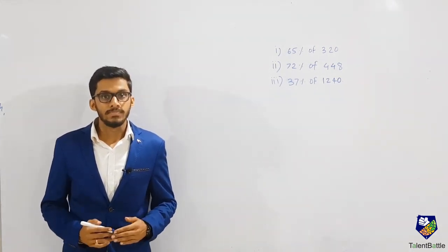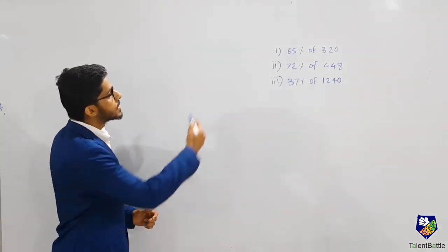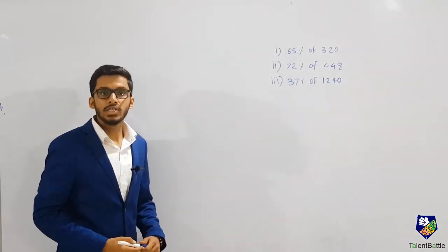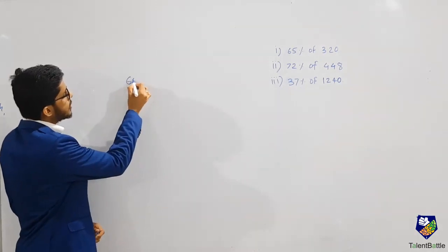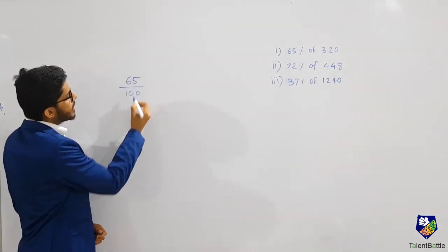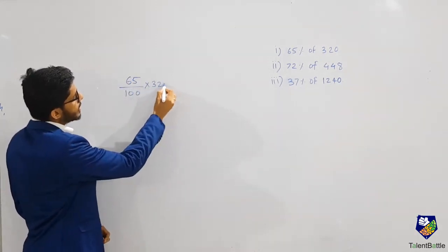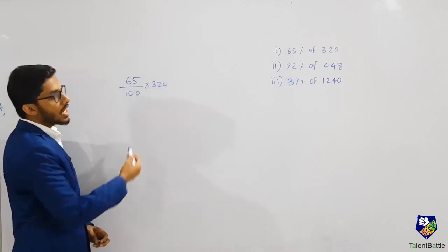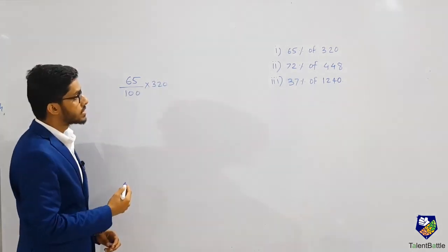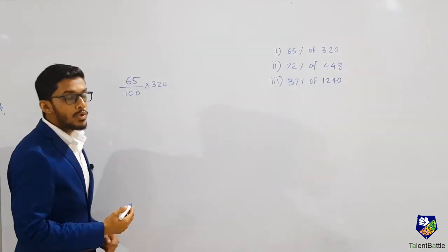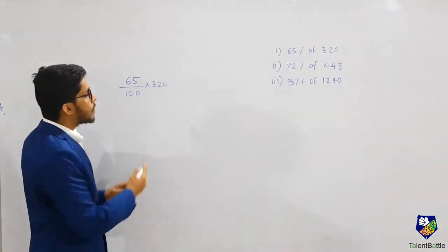So let's look at this first problem: 65 percent of 320. Generally, 65 percent is 65 by 100 multiplied by 320, and if you start solving it this way it becomes very difficult to calculate. Today we are going to check one method by which you can calculate such problems very easily.